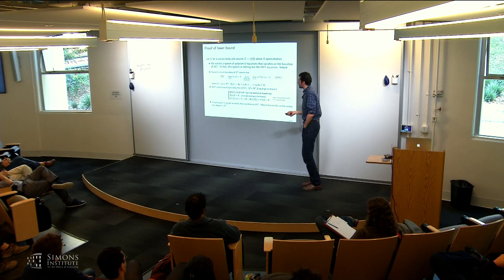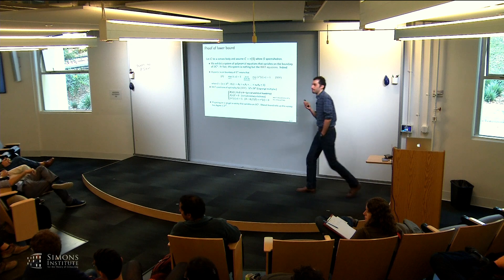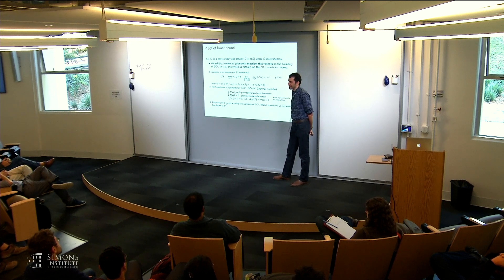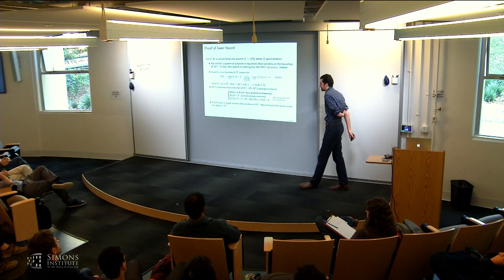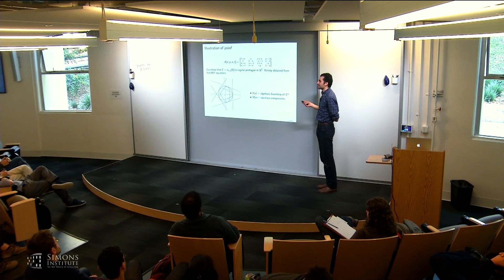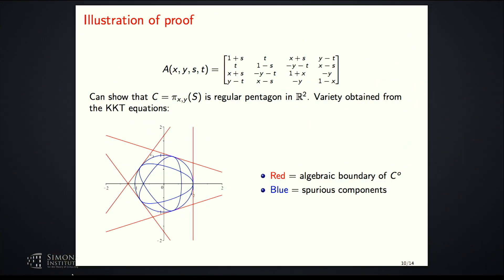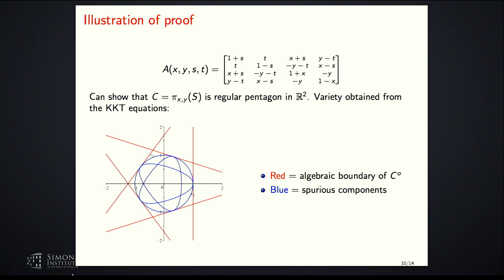Now I want to show that this bound is essentially tight up to constants, and this is where I crucially use the formulas for algebraic degree. The convex bodies for which this will be tight are generic spectrahedra. As an illustration: if I have a linear matrix inequality that projects onto the pentagon, I compute the variety defined by the KKT equations and observe that it traces the boundary of the polar of the pentagon — a slightly rotated pentagon. However, we also observe some spurious components that do not belong to the actual boundary.